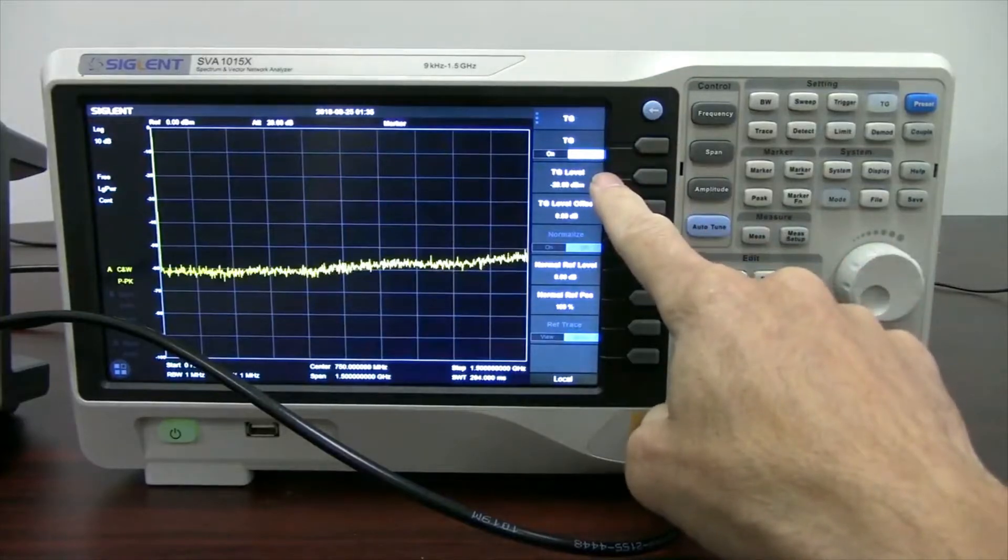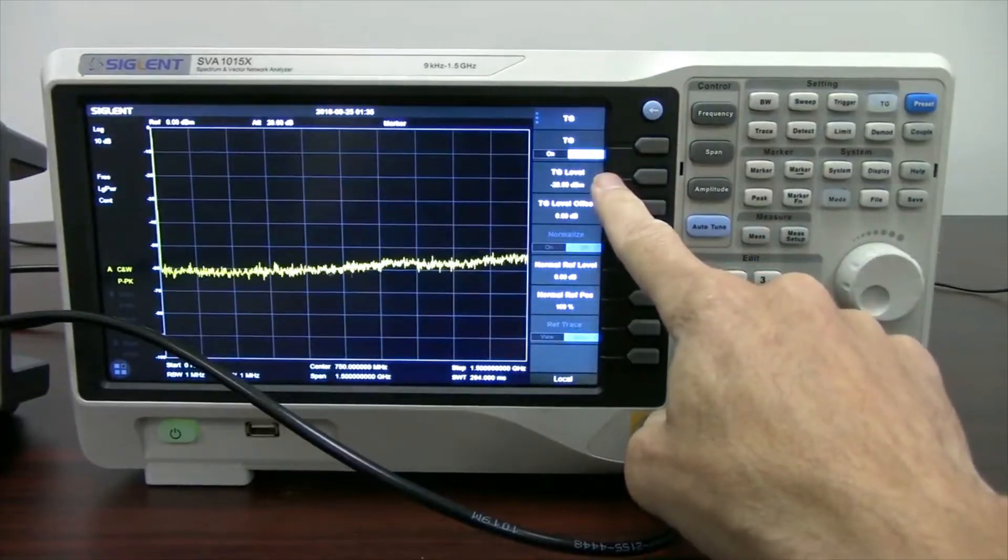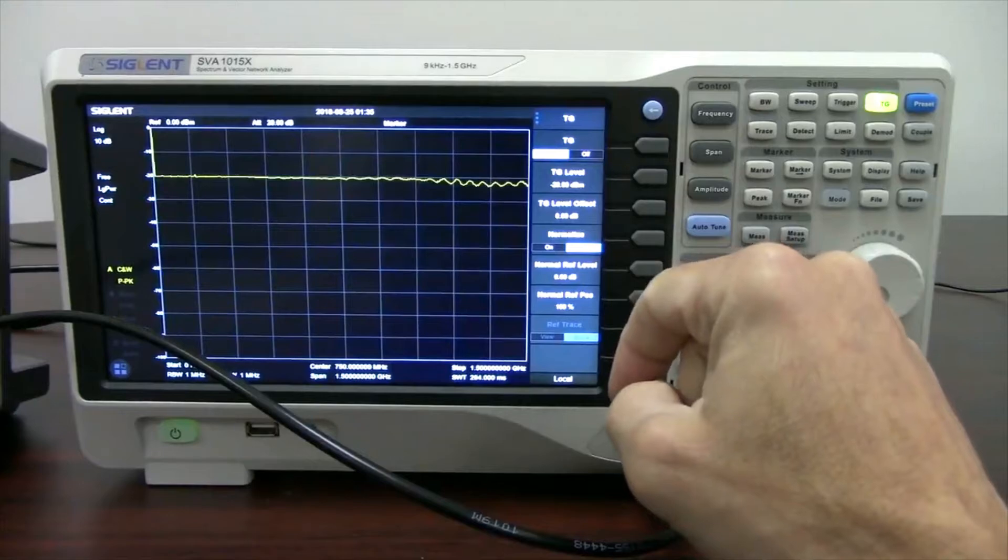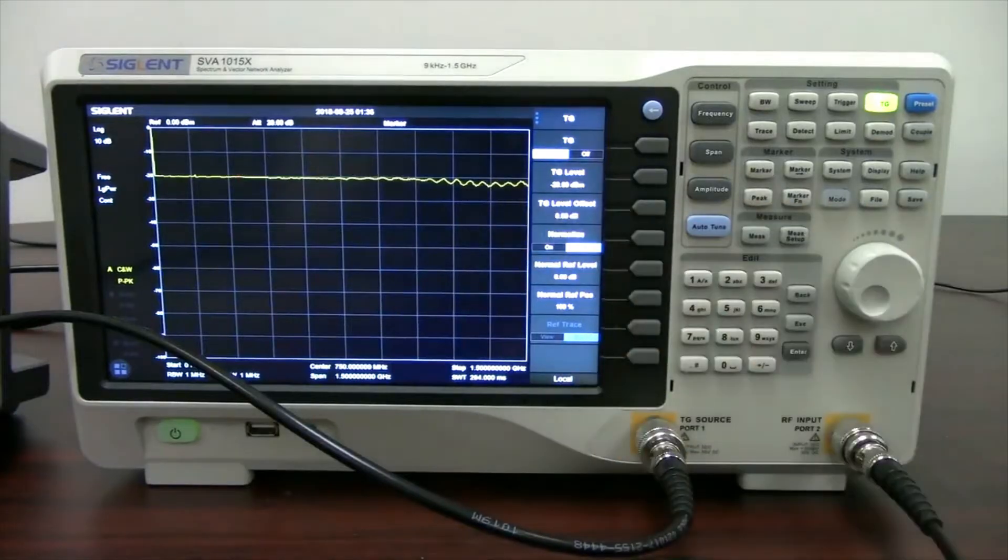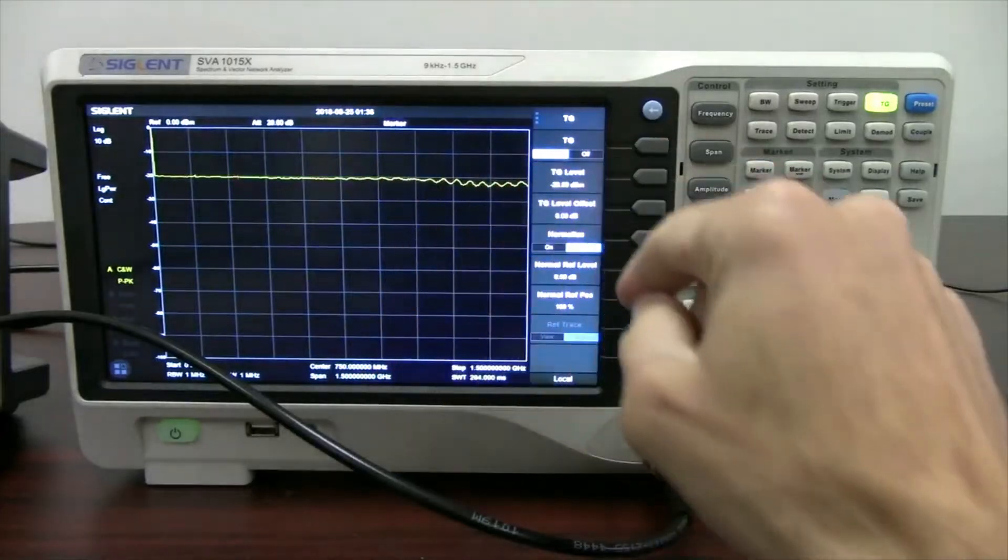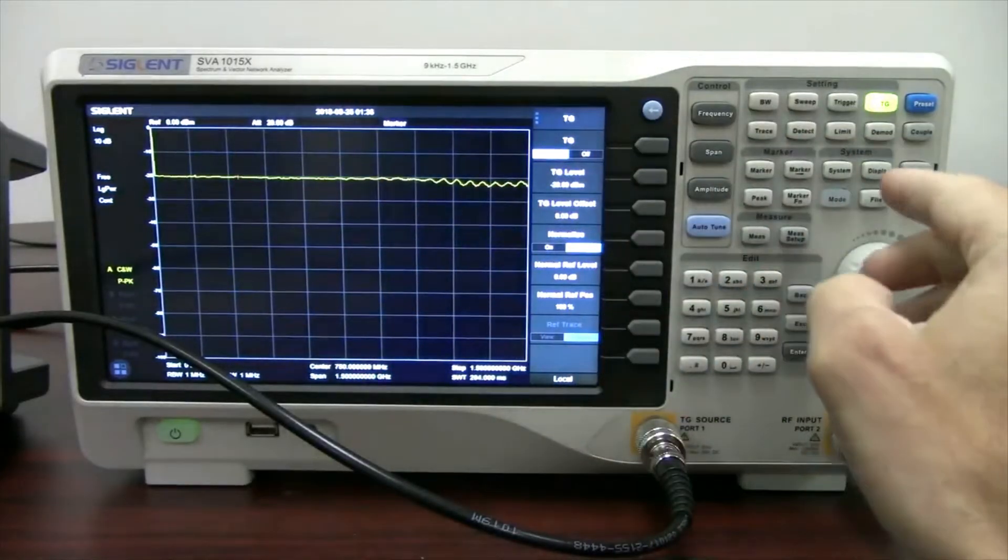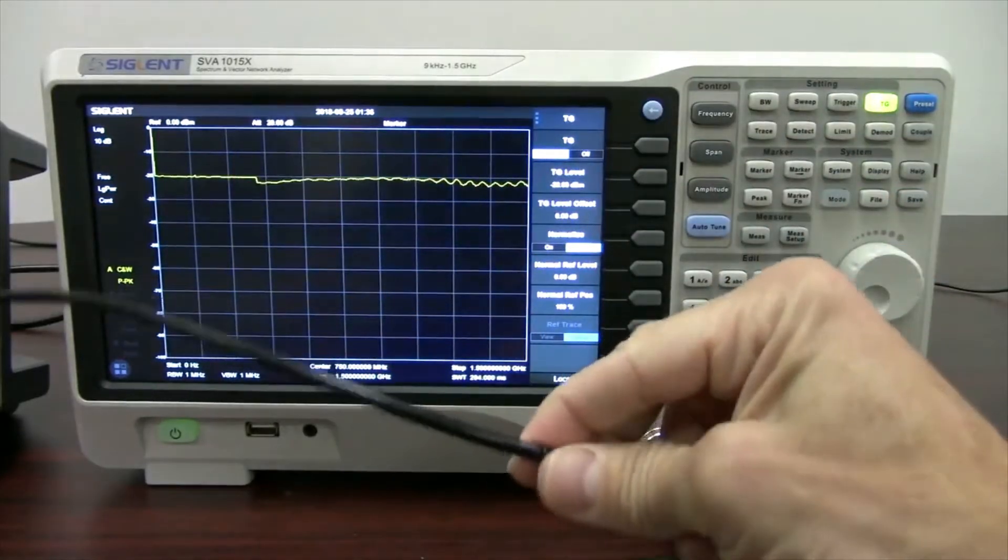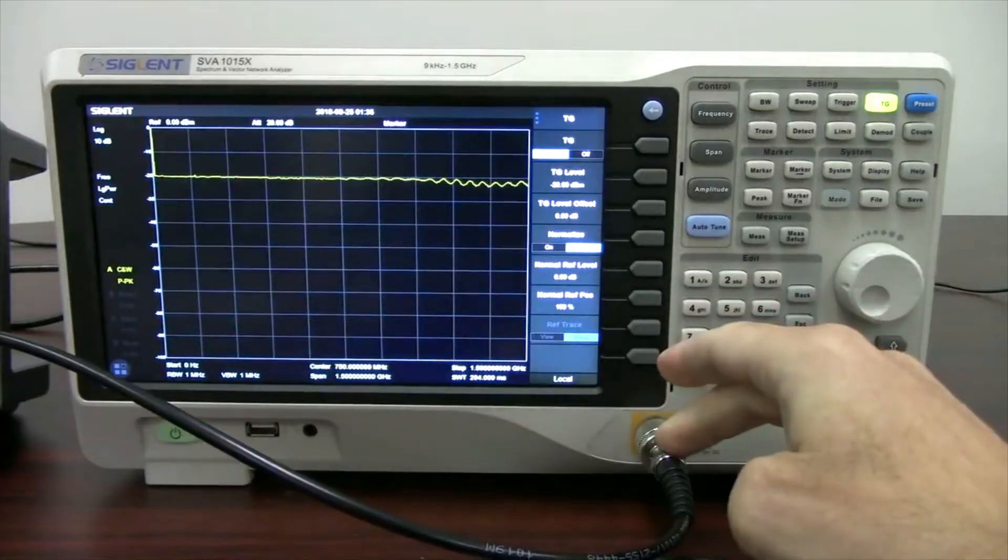And you'll see that the tracking generator level is set to minus 20 dBm. So when we turn on the tracking generator, lo and behold, we've got a line right here coming across about minus 20 dBm. A lot of the ripples and things that you see are totally normal, they're within specifications. Some of them are due to cable effects, as well as the adapters.